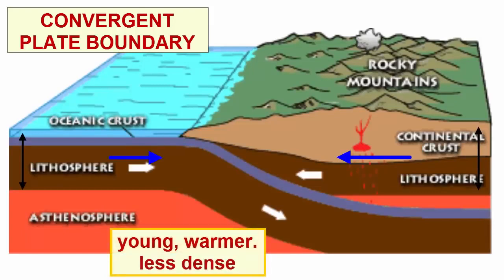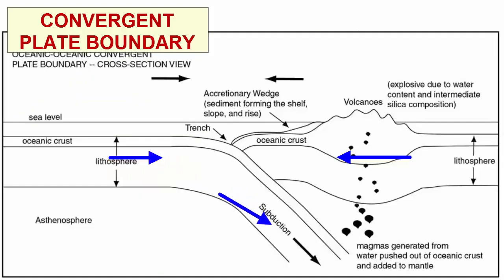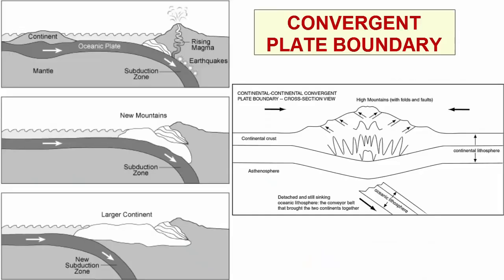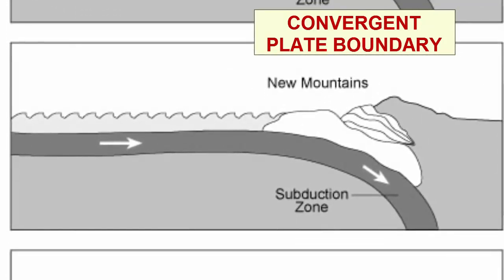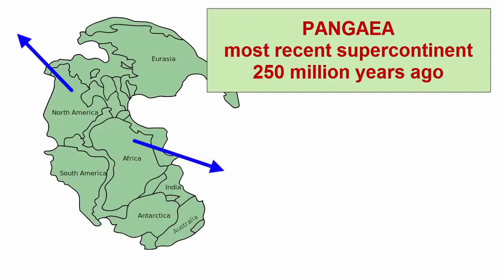If the ocean crust is young and not yet dense enough to sink, it will push under the continental plate and cause the continental crust above to be deformed. Convergent plate boundaries can also exist between two ocean plates if one is much older and the older one subducts under the younger. They can also exist between two continents when the ocean between them fully subducts and the two collide and accrete together to form a larger continent. Just as divergence breaks up continents, convergence is the method for conjoining them.